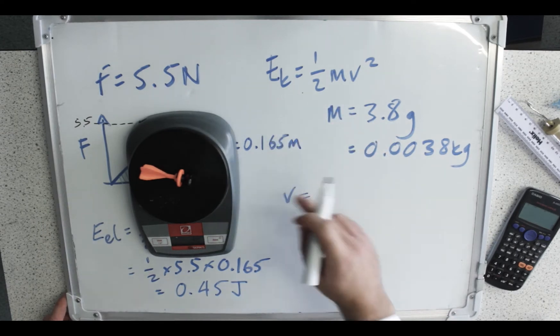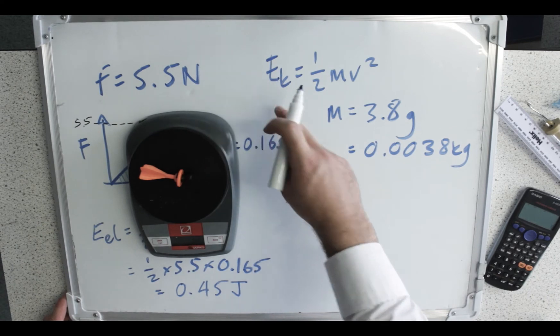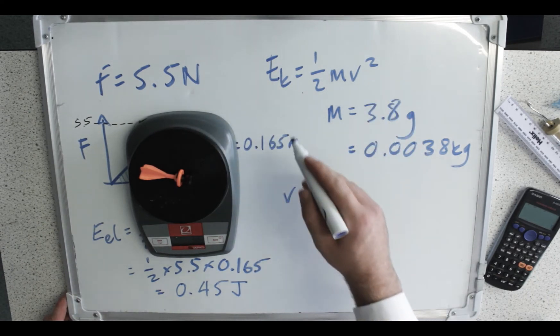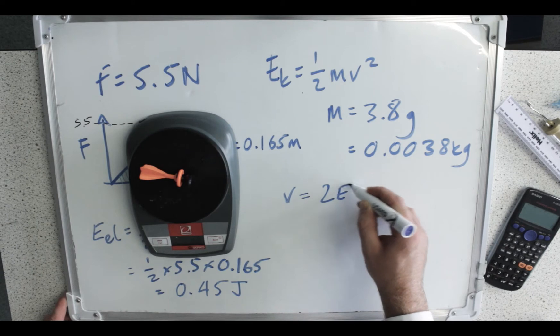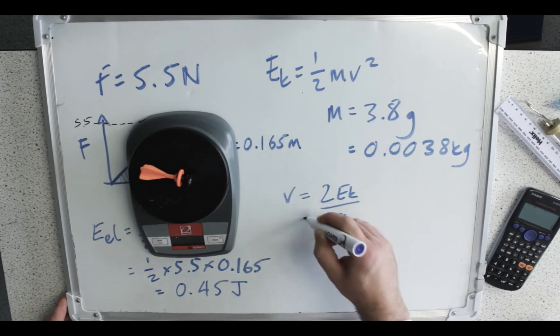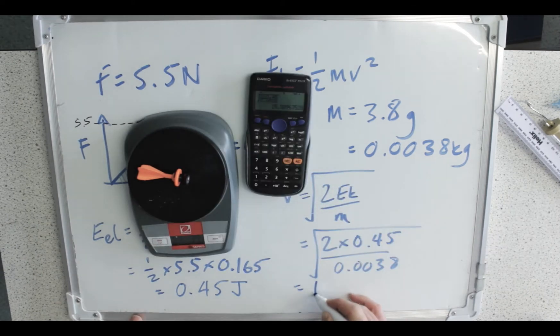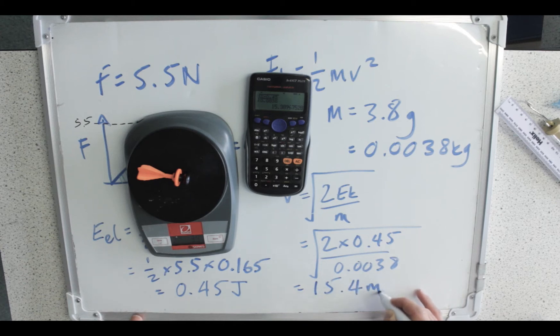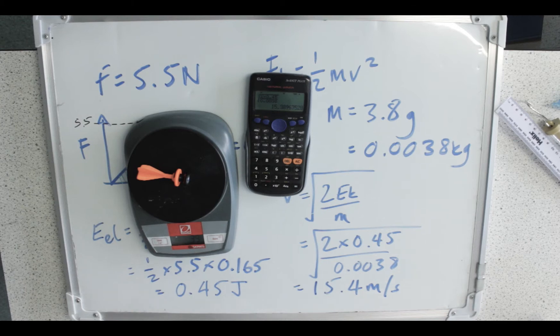And if I rearrange this for V, well, times it by 2, divide it by m, and then root it. So 2EK over m, root it. 15.4 meters per second. That seems quite sensible to me. The room is about 7 meters wide. Does it take about half a second to get to the other end? Yeah, probably.